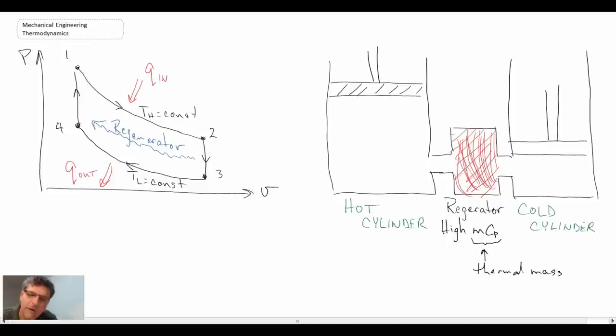So the reason why we want high thermal mass is because when the gas goes through the regenerator, we want it to exchange or deposit, I guess you could say, transfer its thermal energy to the regenerator. And then when the gas comes back the next time, we want the thermal energy to be transferred back to the gas.